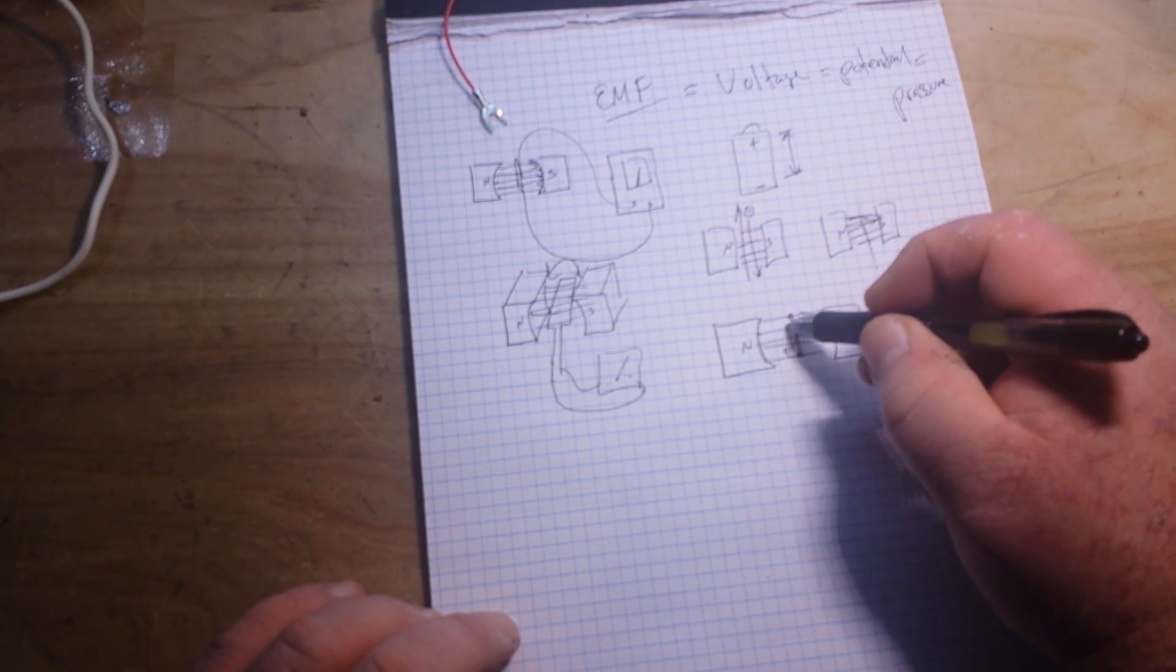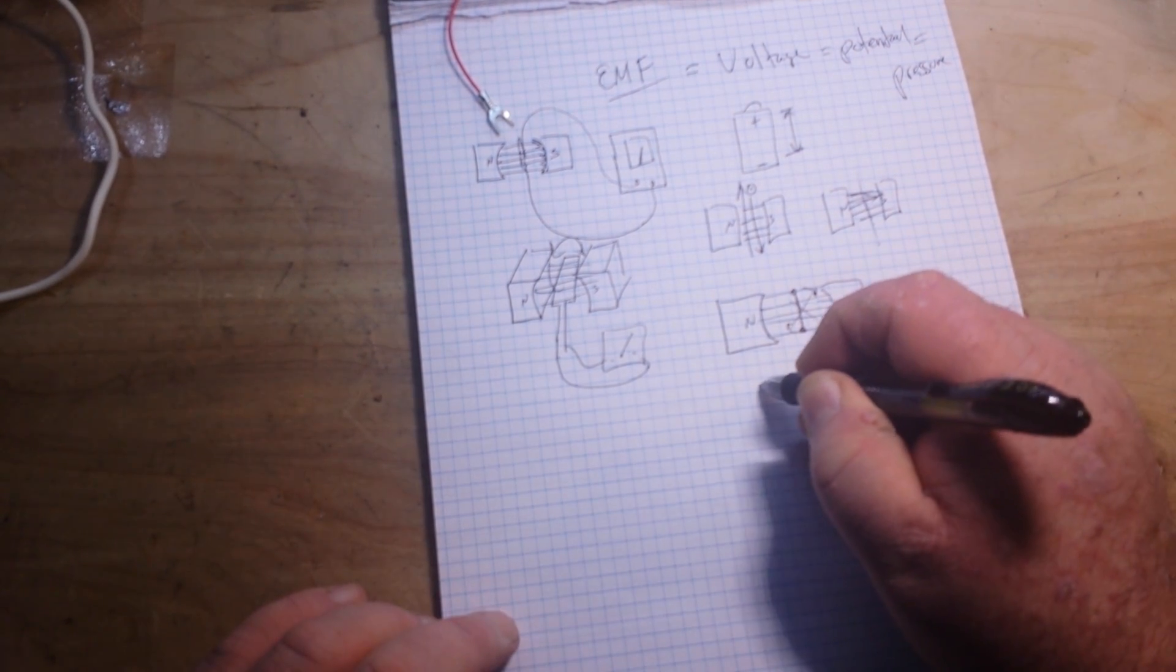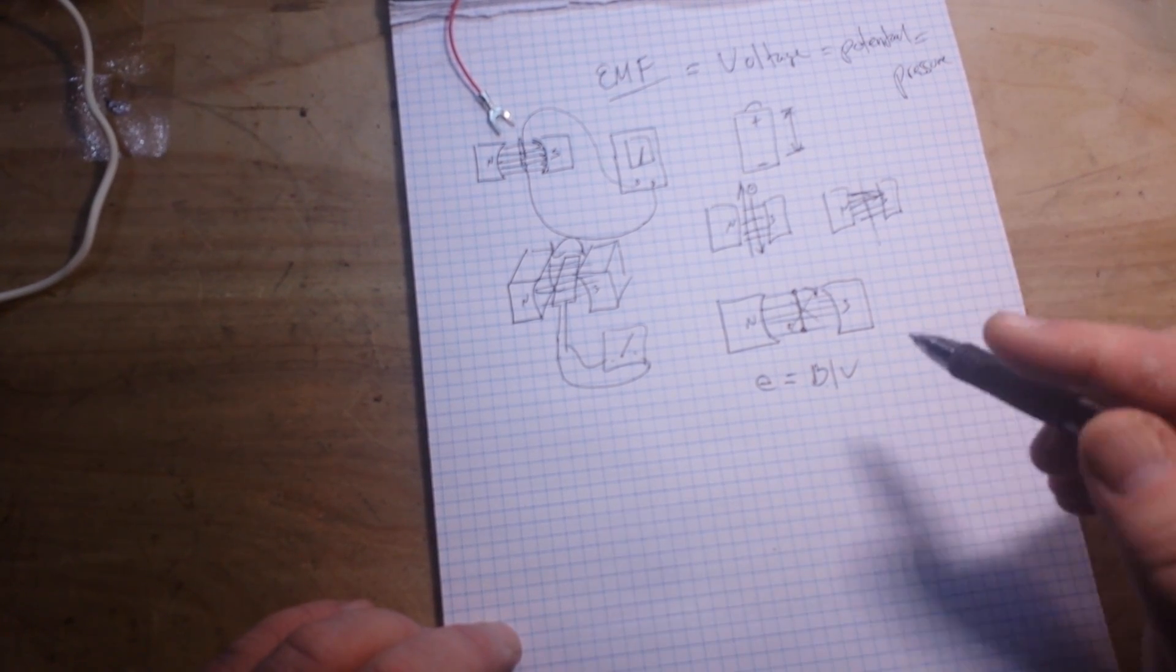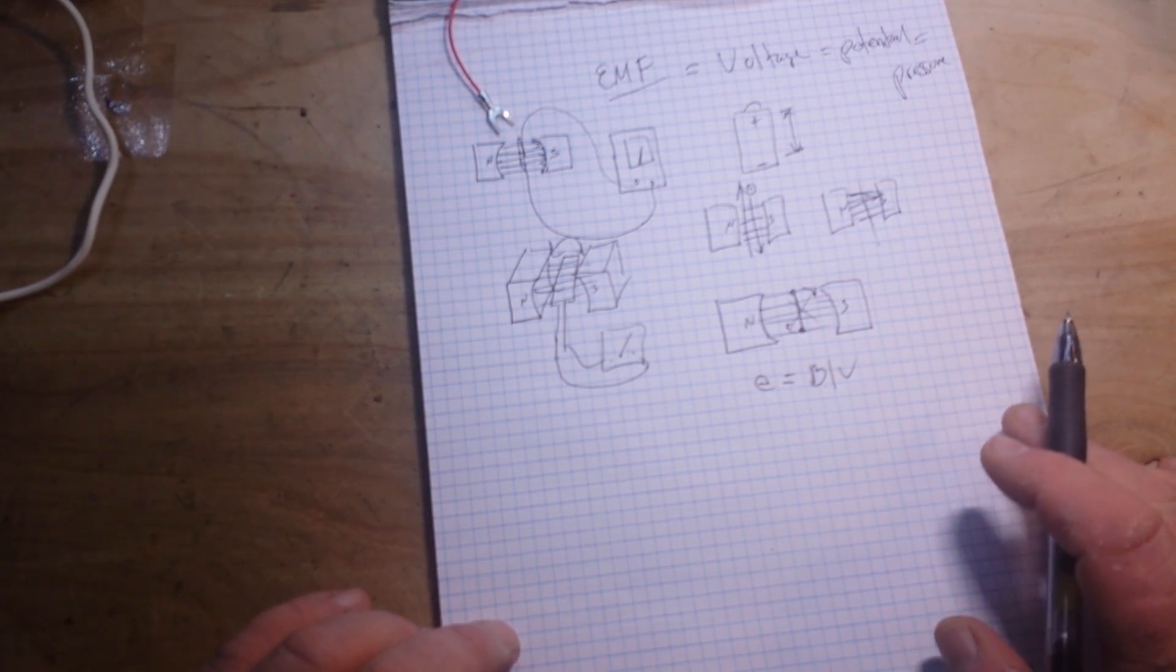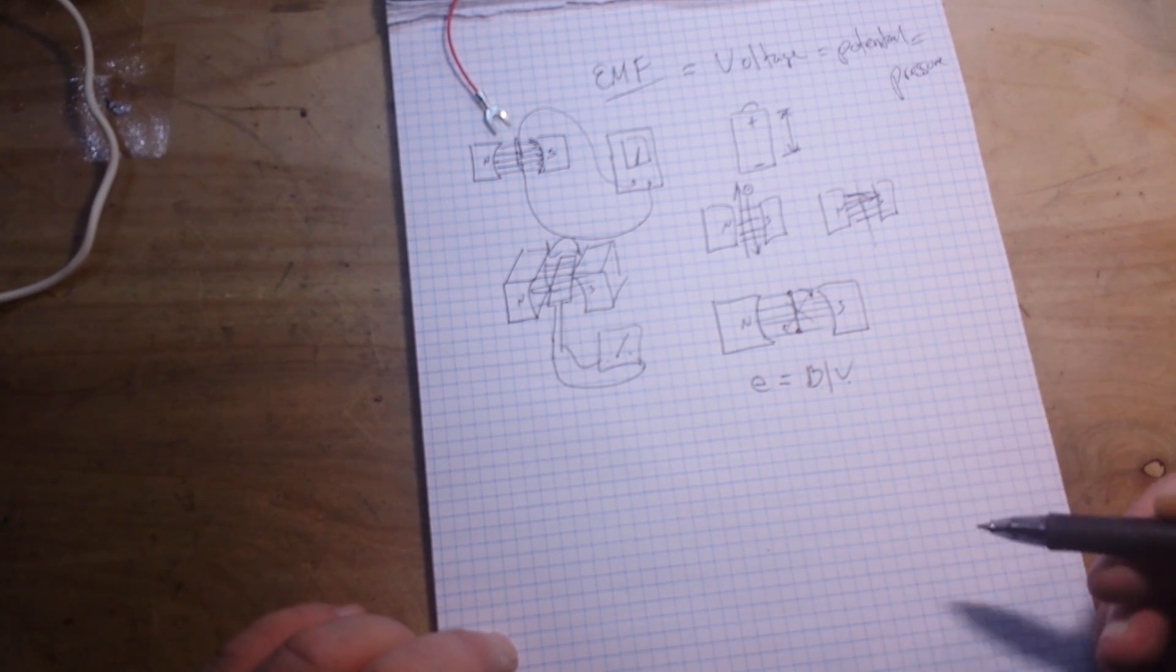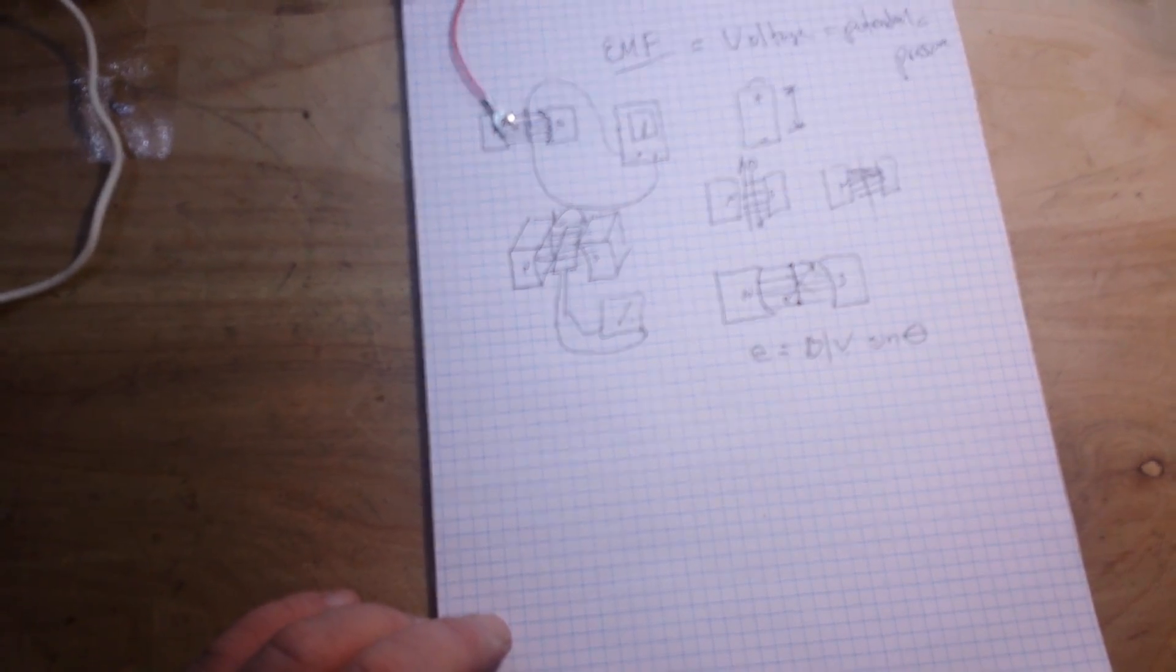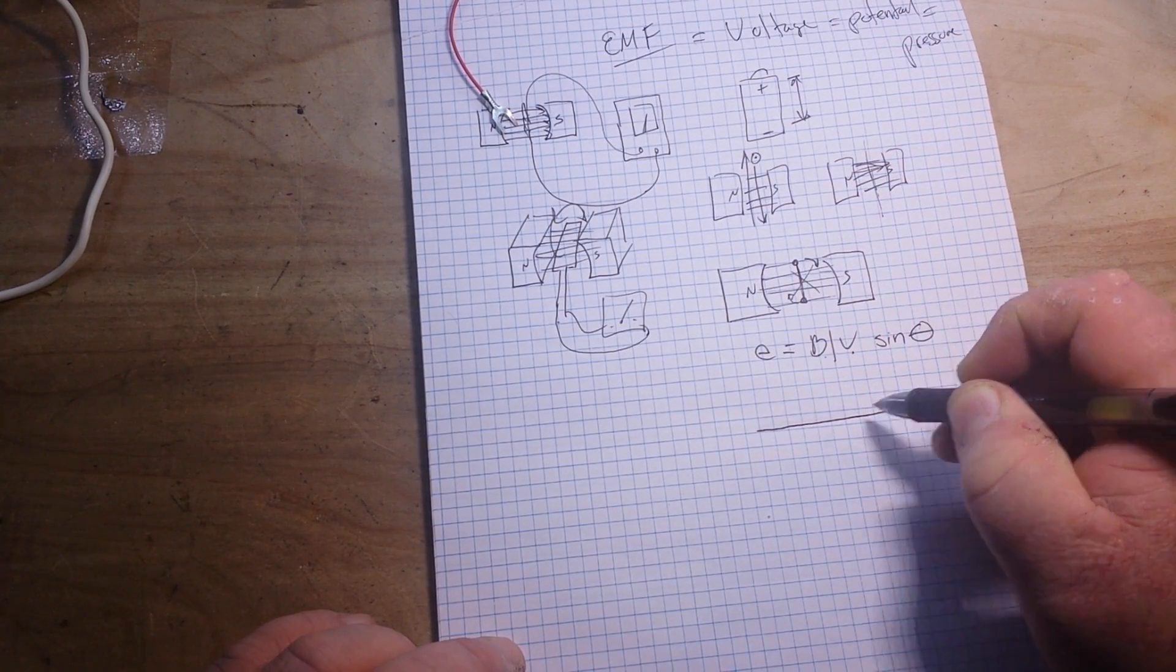So at different points in its rotation, it's going to cut a number of different lines. Now we can figure out electromotive force very simply. The formula is simply BLV. And that is the strength of the field, the length of the conductor, times the velocity. And that works fine when we're moving a piece of wire up and down through an electric field. But when we start to rotate it, things change. And we need to change our formula, our strength of the field, times the length of the conductor, times the velocity of the conductor, times the sine of theta. Alright, now I know you just dropped your coffee and said, what the sine of theta? Yeah, don't worry, it's not hard.